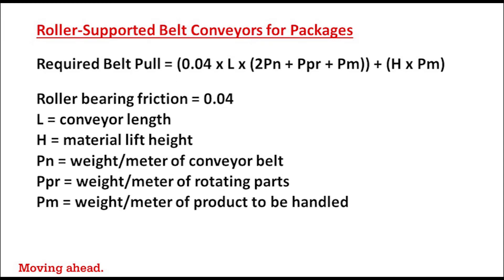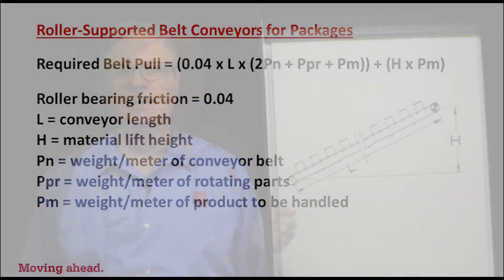Now let's define the terms. L is the length of the conveyor specified in meters. H is the material lift height specified in meters. Pn is the weight per meter of the belt. Ppr is the weight per meter of the rotating parts. And pm is the weight per meter of the products to be handled.